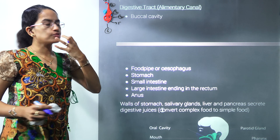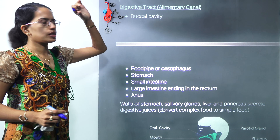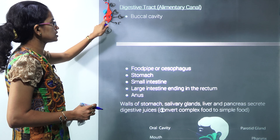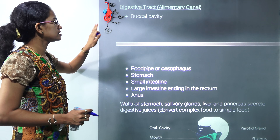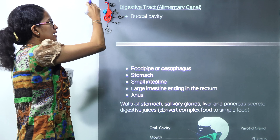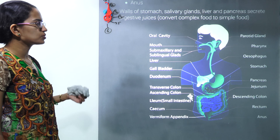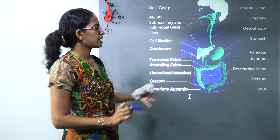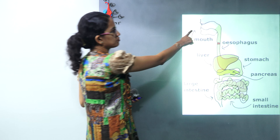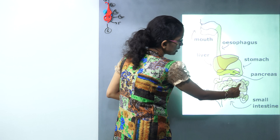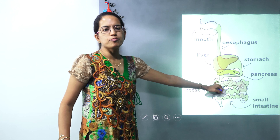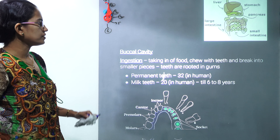The first part is the buccal cavity or mouth. The second is the food pipe, also known as the esophagus. The third is the stomach. The fourth is the small intestine. The fifth is the large intestine, and the sixth is the rectum and anus. The salivary glands in the buccal cavity secrete enzymes that digest food from complex to simpler forms. Food enters, travels through the esophagus into the stomach, then the small intestine, large intestine, and finally exits through the rectum as fecal material.